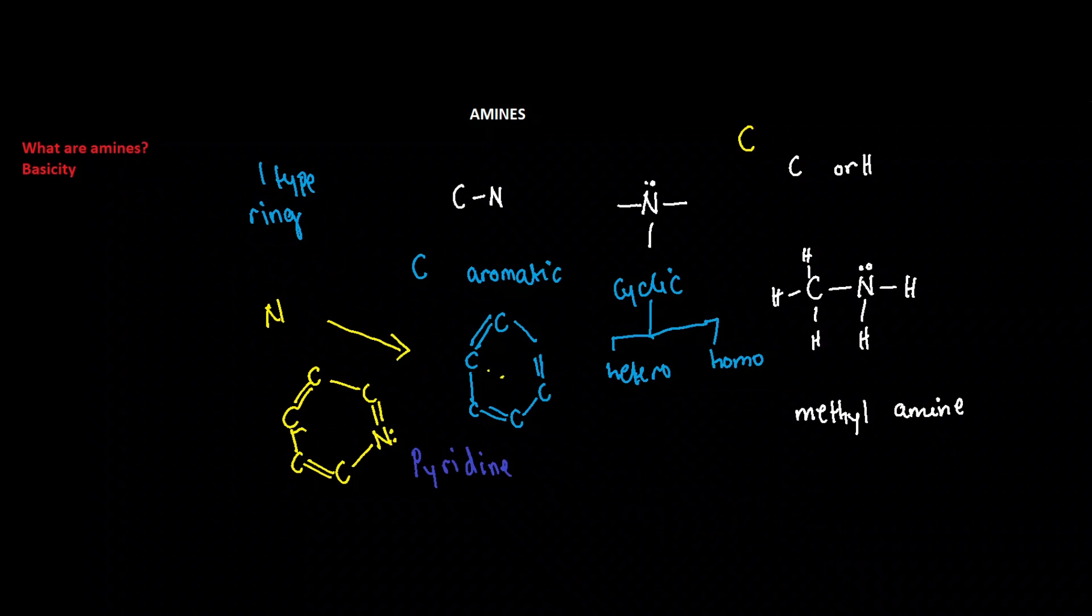Since we have more than one atom forming part of the ring, in other words we have both carbon and nitrogen forming part of the ring structure, it is referred to as a heterocyclic organic compound.